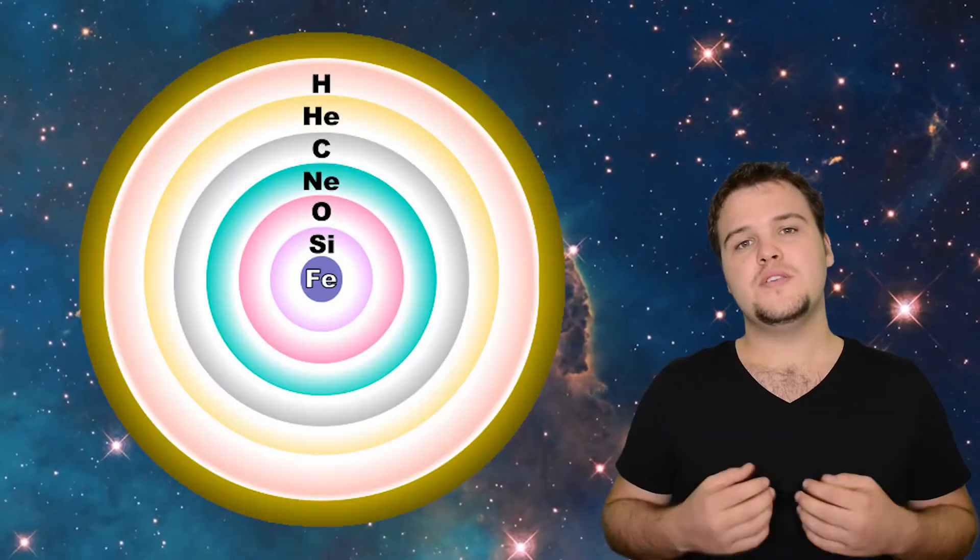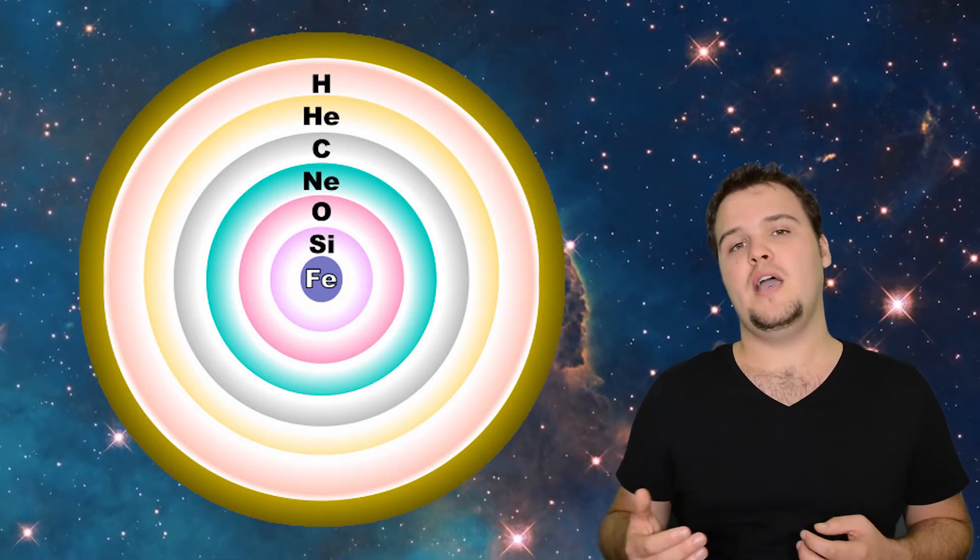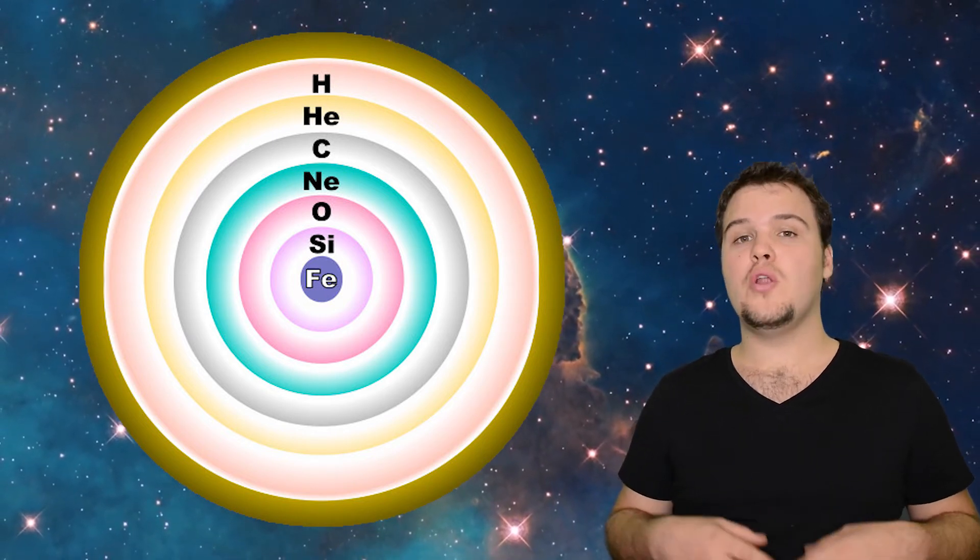Much larger stars, stars around ten to twenty times more massive than our sun, end their life in a supernova event, resulting in a neutron star. So these stars fuse everything up to iron. At that point, fusion no longer radiates energy, allowing the star to collapse in on itself.